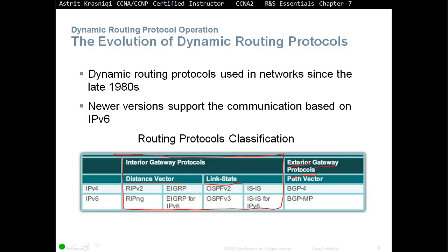For distance vector protocols, we have RIP version 2 for IPv4 and EIGRP. For IPv6, we have RIP-NG (next generation) and EIGRP for IPv6. For link state routing protocols, we also have two choices. For IPv4, we have OSPF version 2 and ISIS. For IPv6, we have OSPF v3 and ISIS for IPv6. OSPF v3 supports both IPv6 and IPv4.